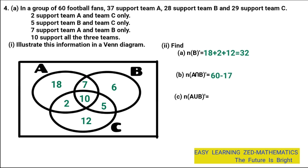Question C: find the number of fans who are not in A union B — that is, A union B complement. We exclude any fan found in set A or set B, whether they support one, two, or three teams. After excluding all such fans, only 12 remains. So 12 is the number of fans not found in A union B.